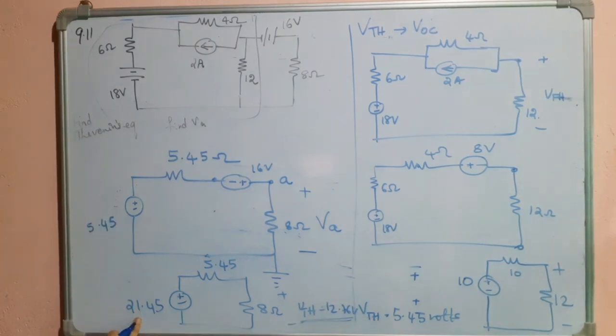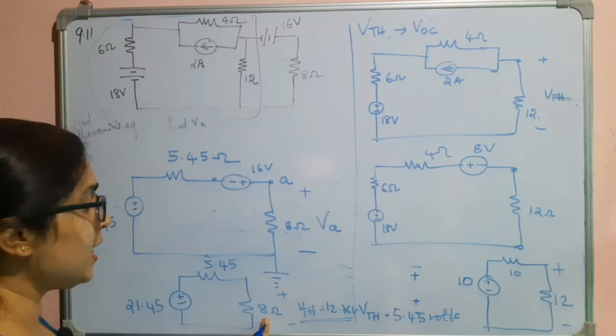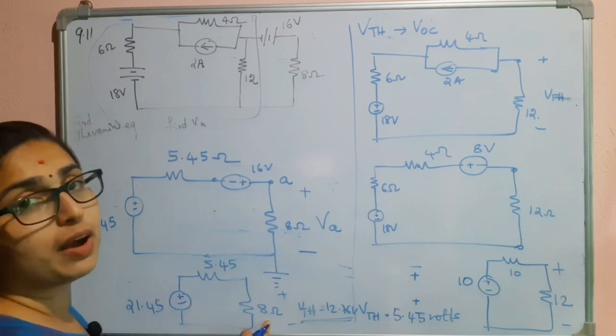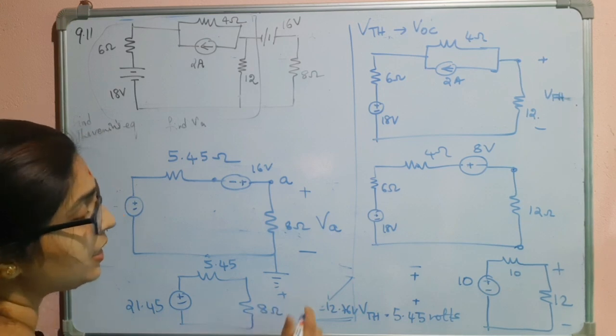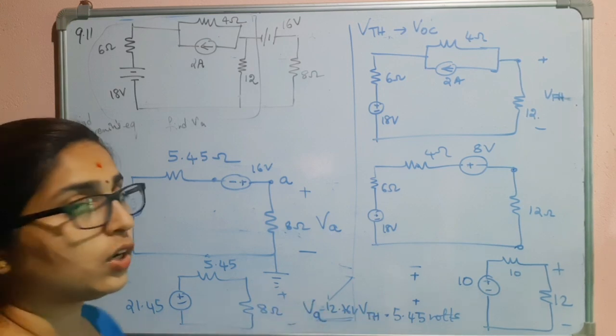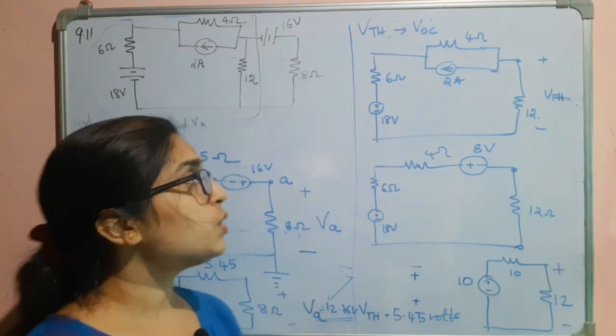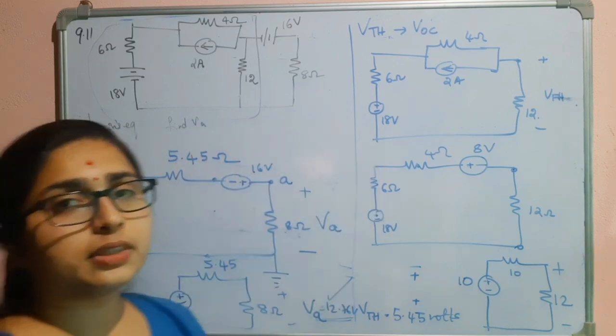That is 21.45 into 8 divided by 5.45 plus 8. That will give you 12.76 volts. Sorry, it is not VTH. It is VA. 12.76 volts. So, this is all about problem 9.11.